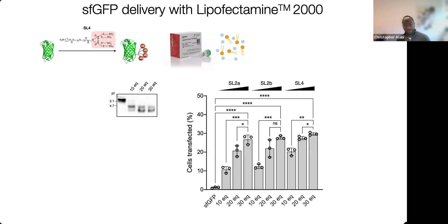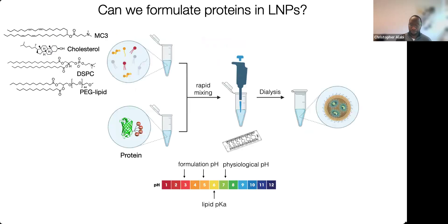The answer was yes. Across all our probes from SL2 to SL4, as we increase the amount of cloaking we perform on our SFGFP protein, we actually increase the percent of cells transfected. But this is all topping out with Lipofectamine at about 30% transfection. So we're really interested in taking this further — rather than using this commercial reagent, we're interested in using lipid nanoparticles that are clinically validated for the delivery of RNAs.